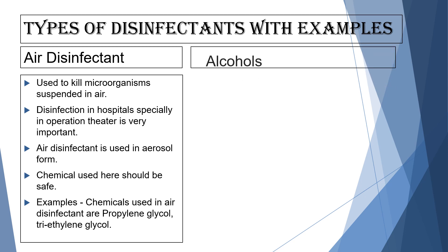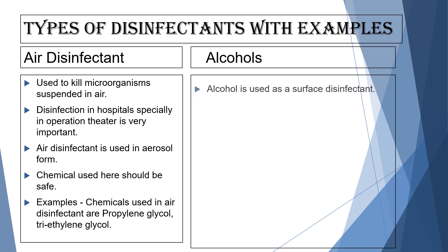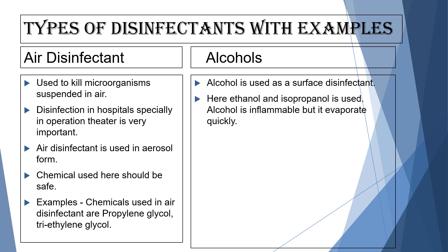The next one is alcohols. Alcohol is used as a surface disinfectant. Here, ethanol and isopropanol is used. Alcohol has a property of inflammable, meaning it can catch fire easily. But it also has an important property that is it evaporates quickly. So we can use alcohols as surface disinfectant.